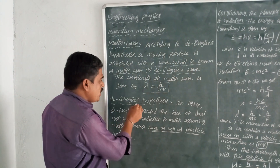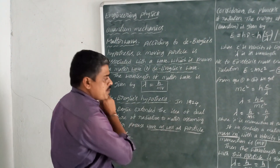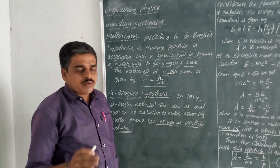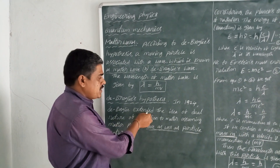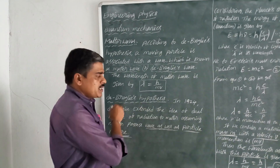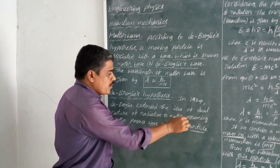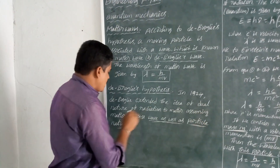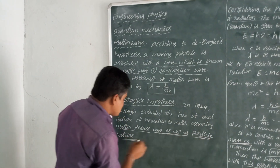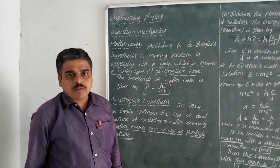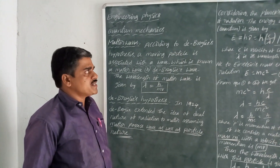De Broglie's hypothesis: In the year 1924, De Broglie extended the idea of dual nature of radiation to matter, assuming matter possesses wave as well as particle nature.